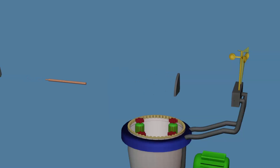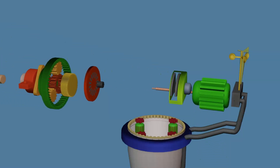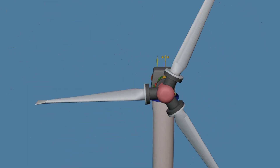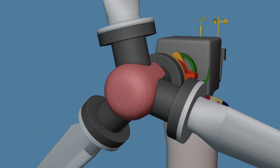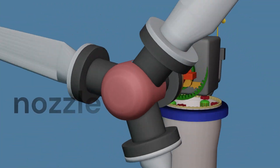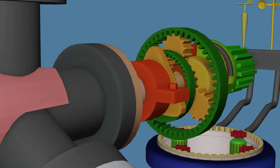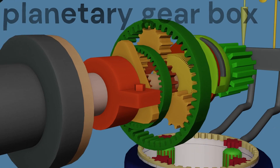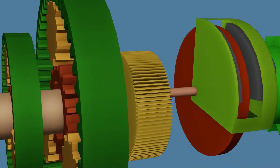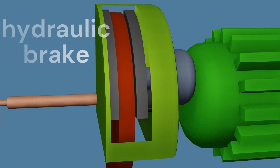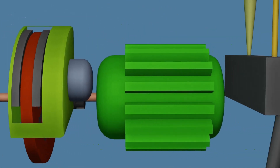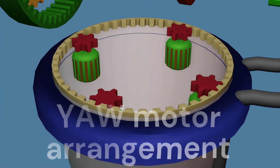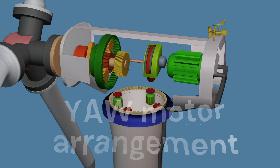Here we see an exploded view of the windmill. The hub is used to hold the three blades and is connected with the motor shaft. A gear mechanism is used to increase low RPM to high RPM — from 40 RPM to 1400 RPM — to produce current. A hydraulic brake is used to stop the windmill to avoid unwanted rotation. An alternator is used to produce electricity. The yaw motor rotates the entire assembly to the required direction. All equipment is covered with suitable material.